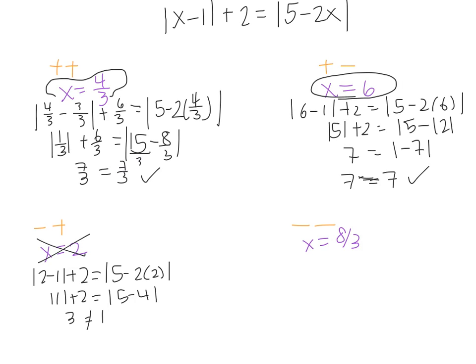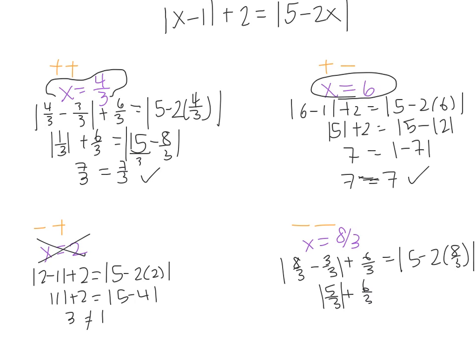Checking x equals 8 thirds: I have 8 thirds minus 3 thirds plus 6 thirds — putting everything in thirds to make it easy to add — equals 5 minus 2 times 8 thirds. So 8 thirds minus 3 thirds is 5 thirds, plus 6 thirds gives 11 thirds. On the right-hand side, 5 minus 16 thirds is 15 thirds minus 16 thirds, which equals negative 1 third. These two are not equal, so x equals 8 thirds is not a solution. That tells us the answer to this equation has 2 solutions: x equals 4 thirds and x equals 6.